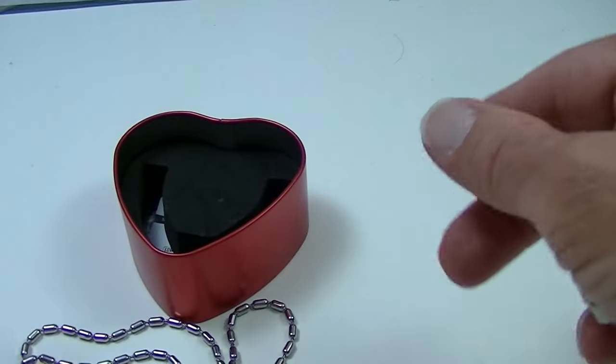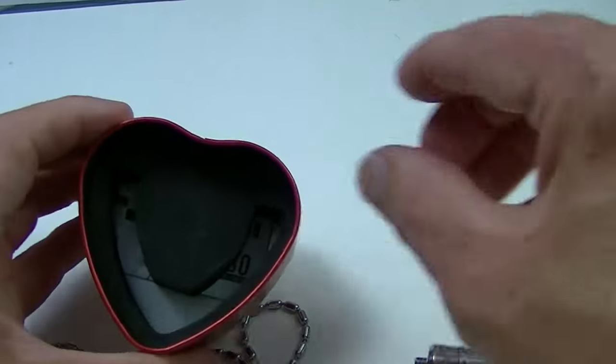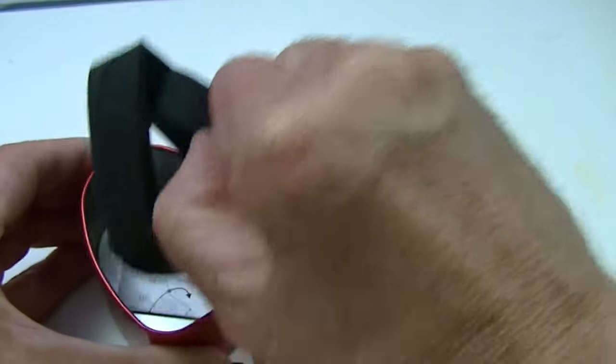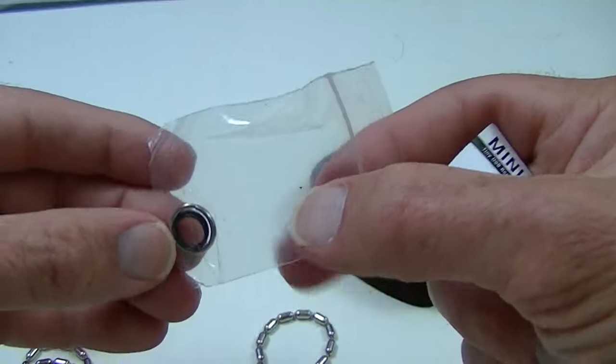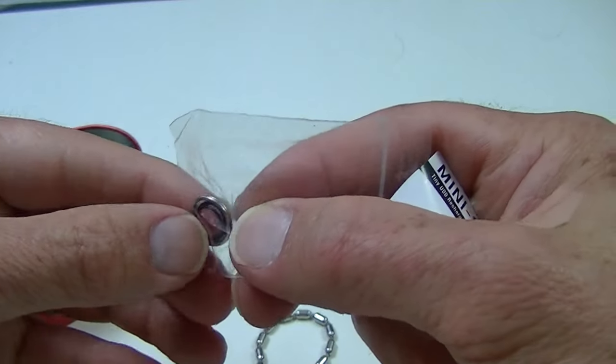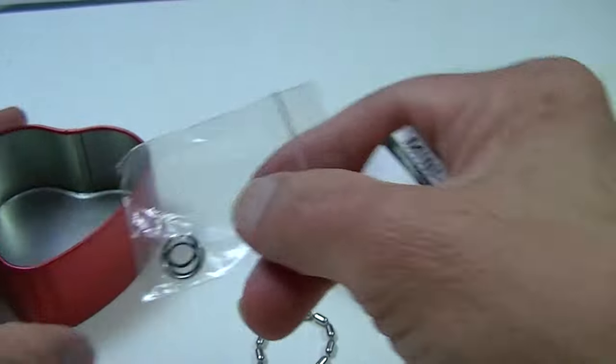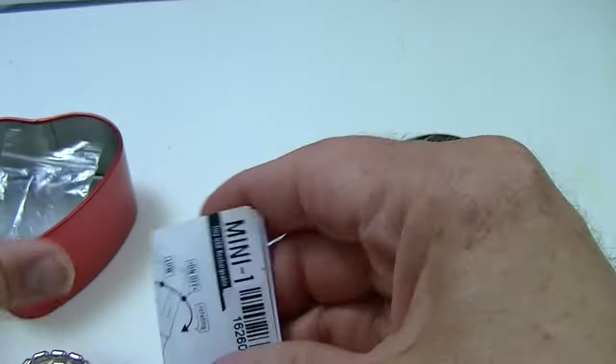Underneath that is another cutout, and then you have some spare accessories in here. Here's a little key ring and an O-ring down on the bottom, and here's the instruction manual.